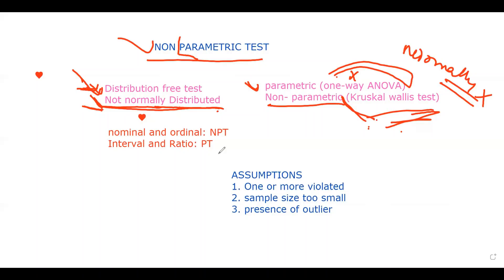Now, a question that comes to your mind, for what kind of data we should use a parametric test and what kind of data we should use a non-parametric test. So in case of nominal and ordinal scaled data, the researcher should use a non-parametric test. But in case of interval and the ratio scale, the researcher should use parametric test. This is one of the assumptions.